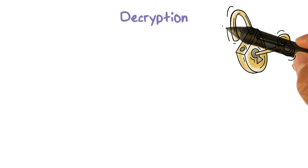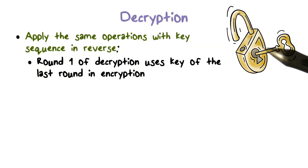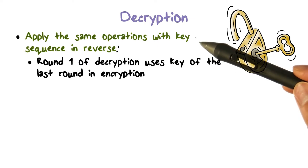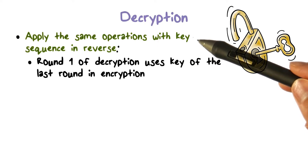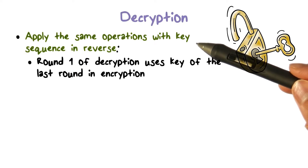The DES algorithm has the so-called Feistel structure. That is, encryption and decryption differ only in key schedule. That is, in decryption, we apply the same operations as in encryption, but only with the key sequence in reverse.